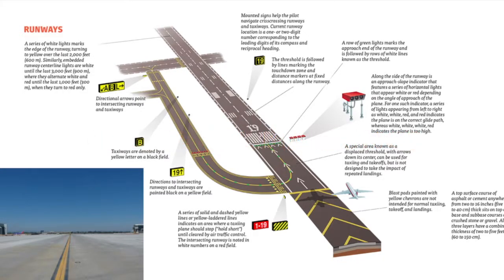The first one is called the taxiway centerline. This is really easy to understand. At the bottom left of your screen, the taxiway centerline is a single yellow line. It provides a visual cue to help identify the location of the hold position so that pilots know they have to taxi along this line. Taxiway centerlines are enhanced prior to a runway holding position marking by using dashed lines on both sides of the centerline.